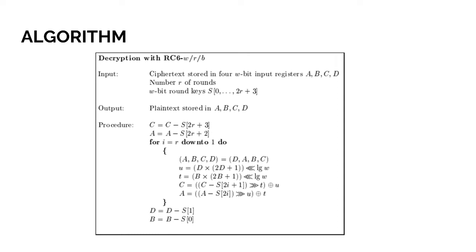Then we will go to the do loop. Then ABCD equals DABC. U equals D times (2D plus 1) triple-less-than log W. T equals B times (2B plus 1) triple-less-than log W. C equals (C minus S(2i plus 1)) triple-more-than T, exclusively or U. A equals (A minus S2i) triple-more-than U, exclusively or T. Then we will finish the do loop. Then it will go to D equals D minus S1, B equals B minus S0. That's all from me. Next, I will pass to Muhammad Syakim for the next presentation.